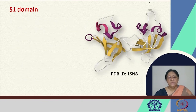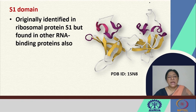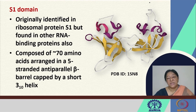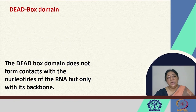The S1 domain is another domain originally identified in a ribosomal protein but found in other RNA binding proteins as well. It is composed of approximately 70 amino acids arranged in a five-stranded anti-parallel beta barrel capped by a short 3-10 helix. The necessity of having these structural motifs lies in recognition — the domains are large in order to recognize the RNA structure.